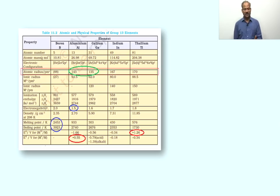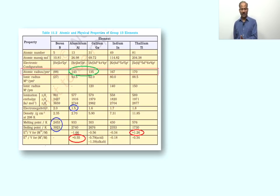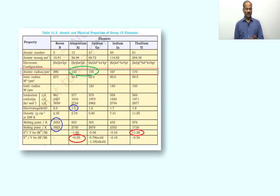In general we can arrange the size order such that Boron is the smallest, then along with Gallium together, then Aluminium, and then Thallium. That is how the atomic radius order in Group 13 works.